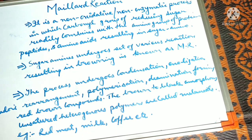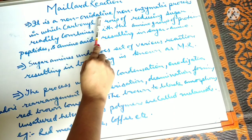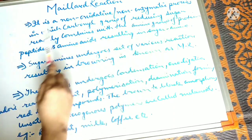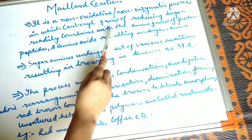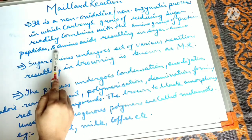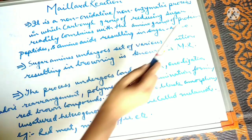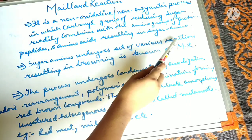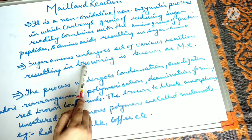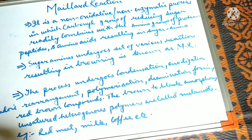The Maillard reaction is a non-oxidative and non-enzymatic process in which the carbonyl group of a reducing sugar readily combines with the amino group of protein, peptides, or amino acids, resulting in a sugar amine. The sugar amine then undergoes a set of various reactions resulting in browning — this is known as the Maillard reaction. It is a very complex process with complex reactions involved.